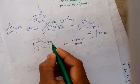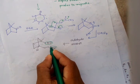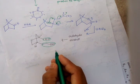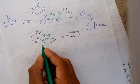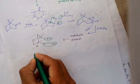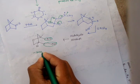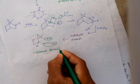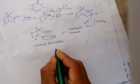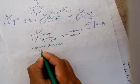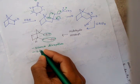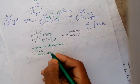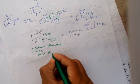This OH and this CH2CH2OH should be in the same direction. They are cis to each other, so the product will be cis.